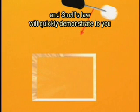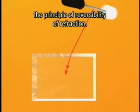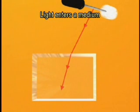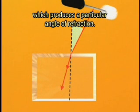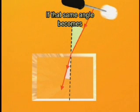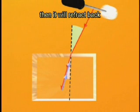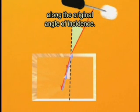Play with angles of incidence and refraction, and Snell's Law will quickly demonstrate to you the principle of reversibility of refraction. Light enters a medium with a particular angle of incidence, which produces a particular angle of refraction. If that same angle becomes the angle of incidence of light leaving the medium, then it will refract back along the original angle of incidence.